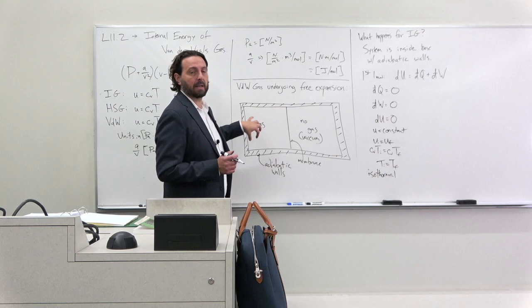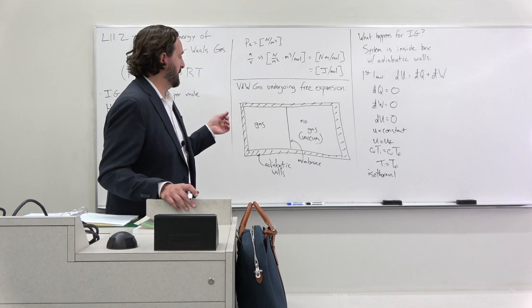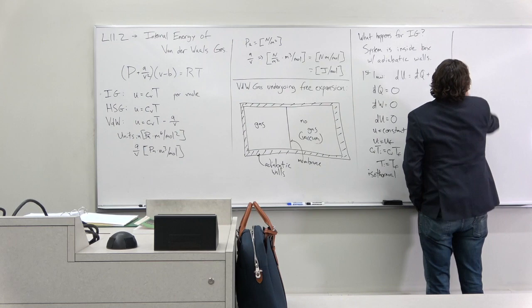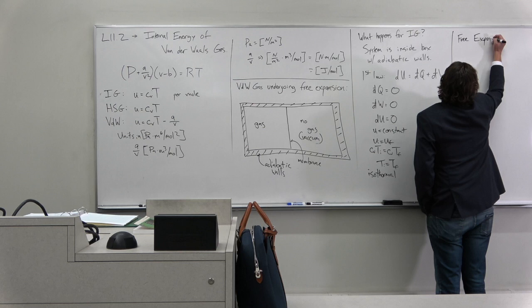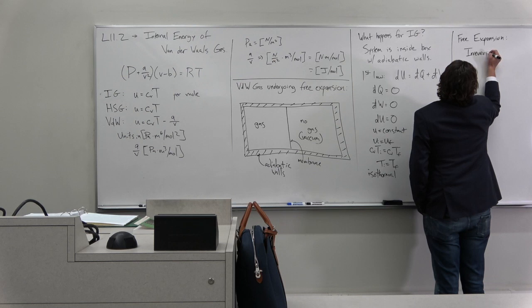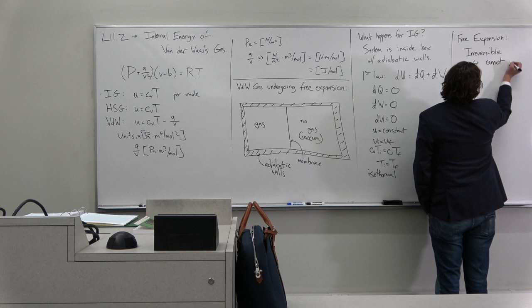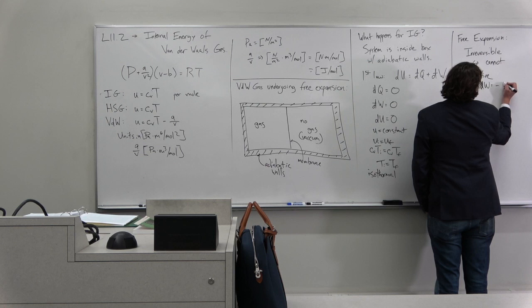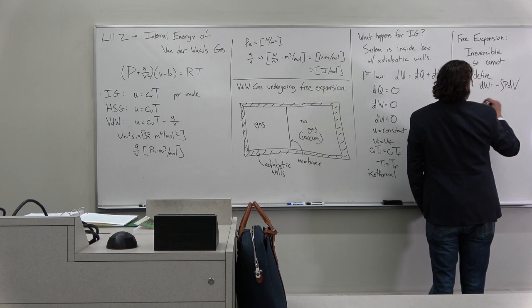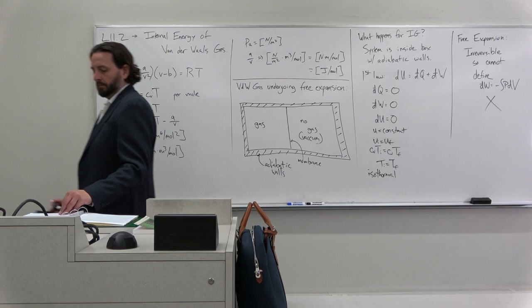Now, the key feature in thinking about that is you still want to say, oh, but it's got a PDV, an integral of PDV. Well, you can't use the integral of PDV unless it's a reversible process. And this free expansion is irreversible. How do I jam that back? I can't put this membrane back and suddenly have my gas there again. So a free expansion, a truly free expansion is irreversible. So, cannot define DW as minus PDV. This is not okay.